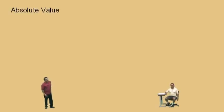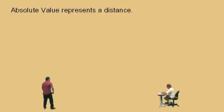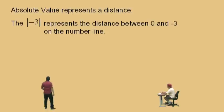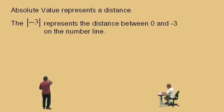Absolute value. Absolute values actually represent distance. That's why they're always positive. So, absolute value represents a distance. Here we go — the absolute value of negative 3. Notice the symbol for absolute value is these two bars around that negative 3. So that is the absolute value of negative 3.